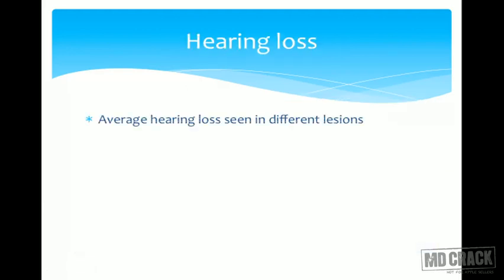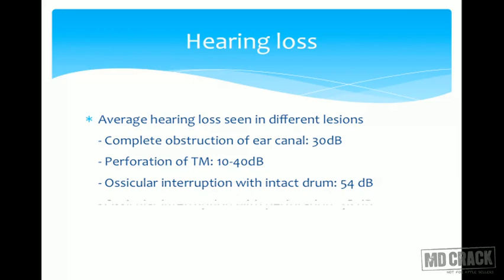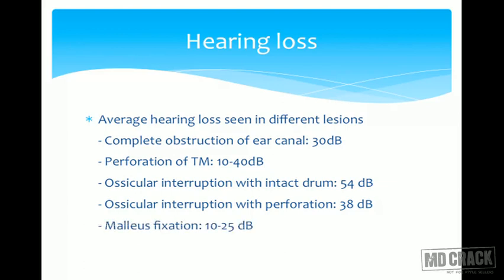Average hearing loss in different lesions: complete obstruction of the ear canal causes approximately 30 dB loss; tympanic membrane perforation causes 10–40 dB depending on size and site; ossicular interruption with intact drum causes approximately 54 dB; ossicular interruption with perforation causes approximately 38 dB — notably less than with intact drum. Fixed malleus causes 10–25 dB loss; closure of the oval window causes approximately 60 dB loss.